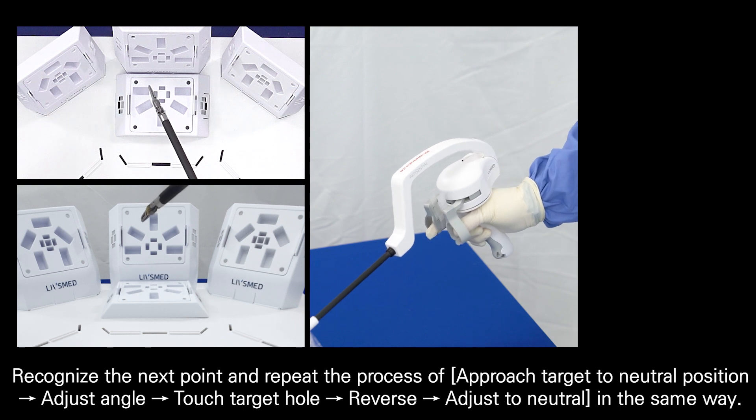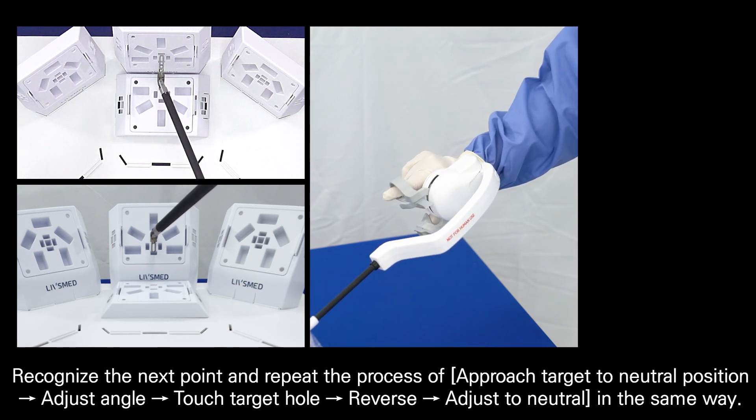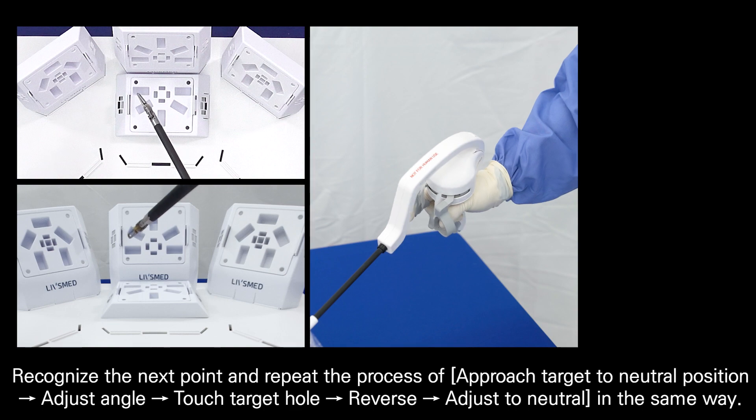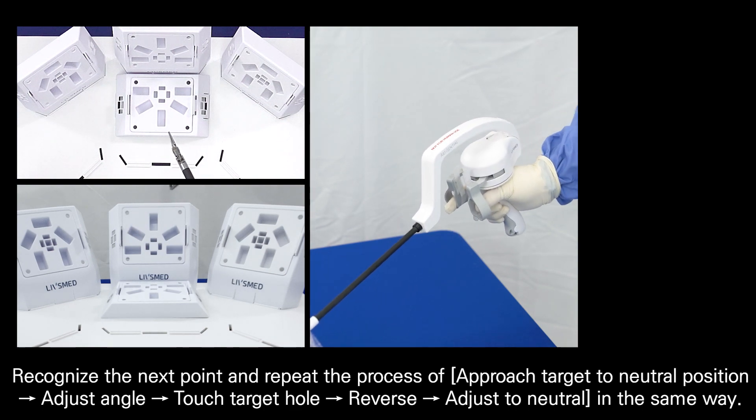Recognize the next point and repeat the process of approach target to neutral position and adjust angle for each target hole, reverse adjust to neutral in the same way.